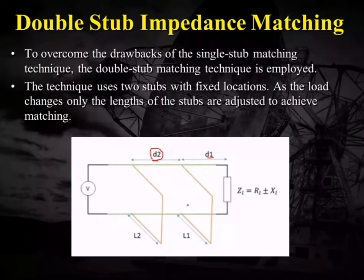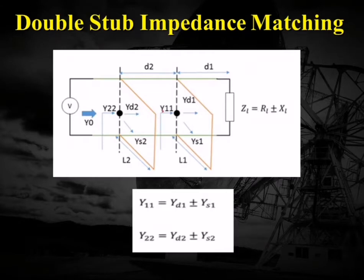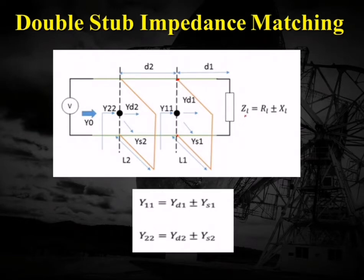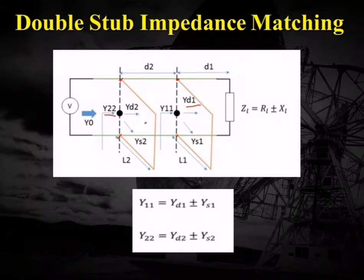Only the lengths l1 and l2 are important here; d1 is also not important. Instead of impedances, we will use admittances. The admittance y11, observed at the first stub location, is the sum of the admittance of the short circuit stub ys1 and the admittance of the transmission line of length d1 with load impedance zL, denoted zt1. Similarly, y22 is the sum of the admittance of the second stub and the admittance looking toward the load, denoted yd2.